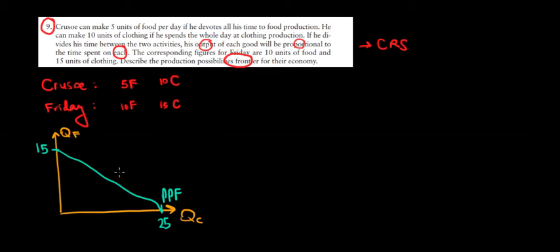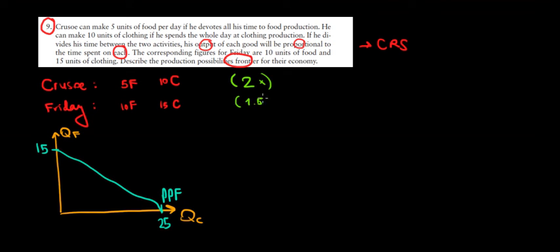The question is what are they actually going to produce — what's the optimal point? We must think about what each person is relatively better at. It's wiser to focus rather than dilute effort in both directions. Cruso produces twice as much clothing relative to food, so he's twice as good at clothing relative to food. Friday is only 1.5 times better at clothing than food, producing 15 instead of 10. So Cruso is relatively better at clothing — he should produce clothing — and Friday should focus on food production.